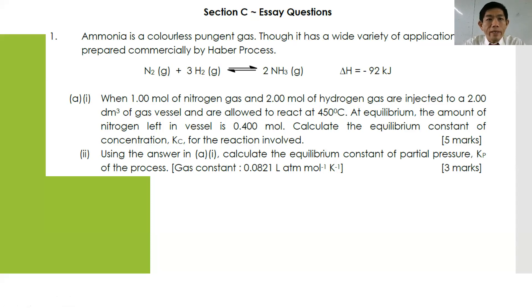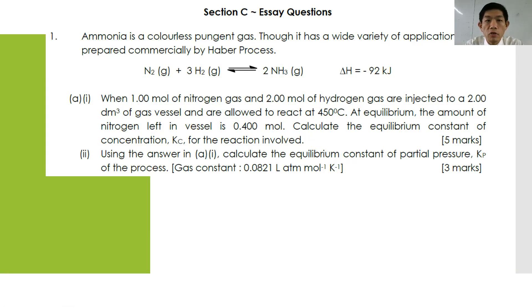Let's start from essay question number one. Ammonia is a colorless pungent gas, though it has a wide variety of applications and is prepared commercially by using the Haber process, according to the equation: N₂ + 3H₂ → 2NH₃, delta H is negative 92 kilojoules. A1: when 1.00 mol of nitrogen gas and 2.00 mol of hydrogen gas are injected into a 2.00 dm³ vessel and allowed to react at 450°C, at equilibrium, the amount of nitrogen left in the vessel is 0.400 mol.